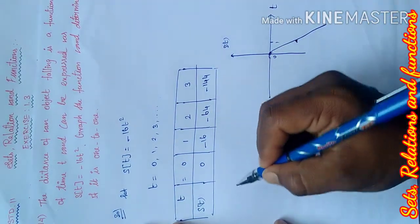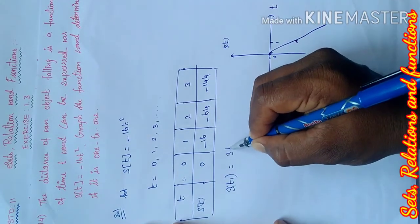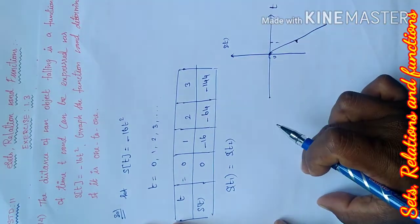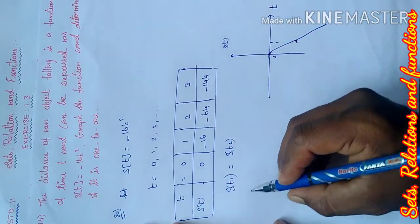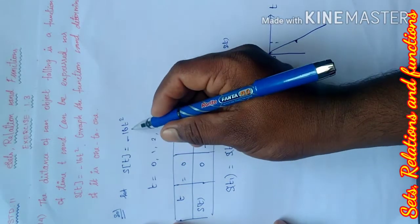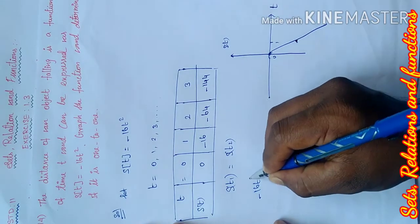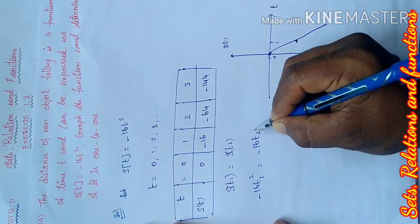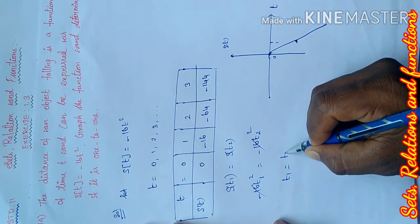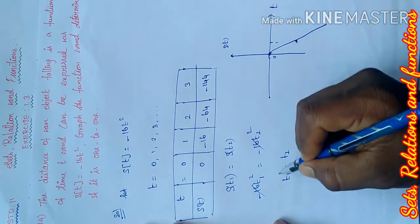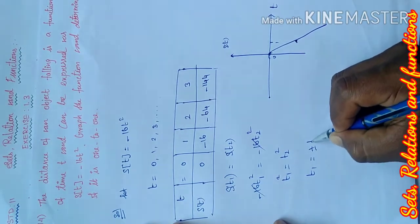To determine one-to-one: if s of t1 equals s of t2, then t1 must equal t2. So minus 16 t1 squared equals minus 16 t2 squared. This gives t1 squared equals t2 squared.